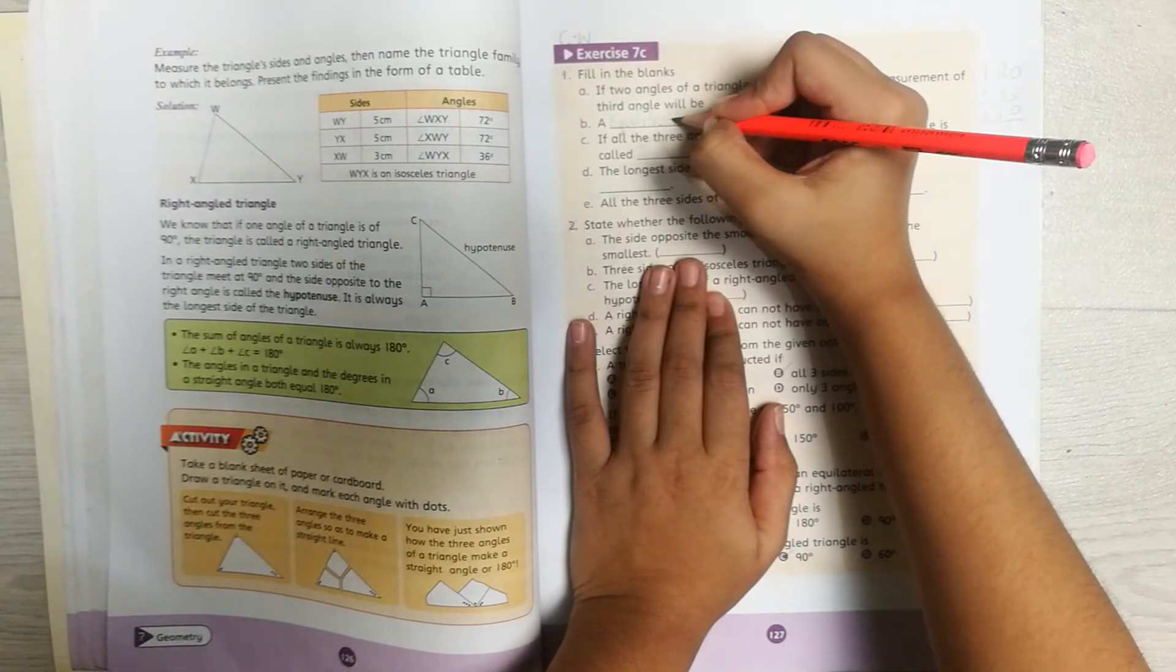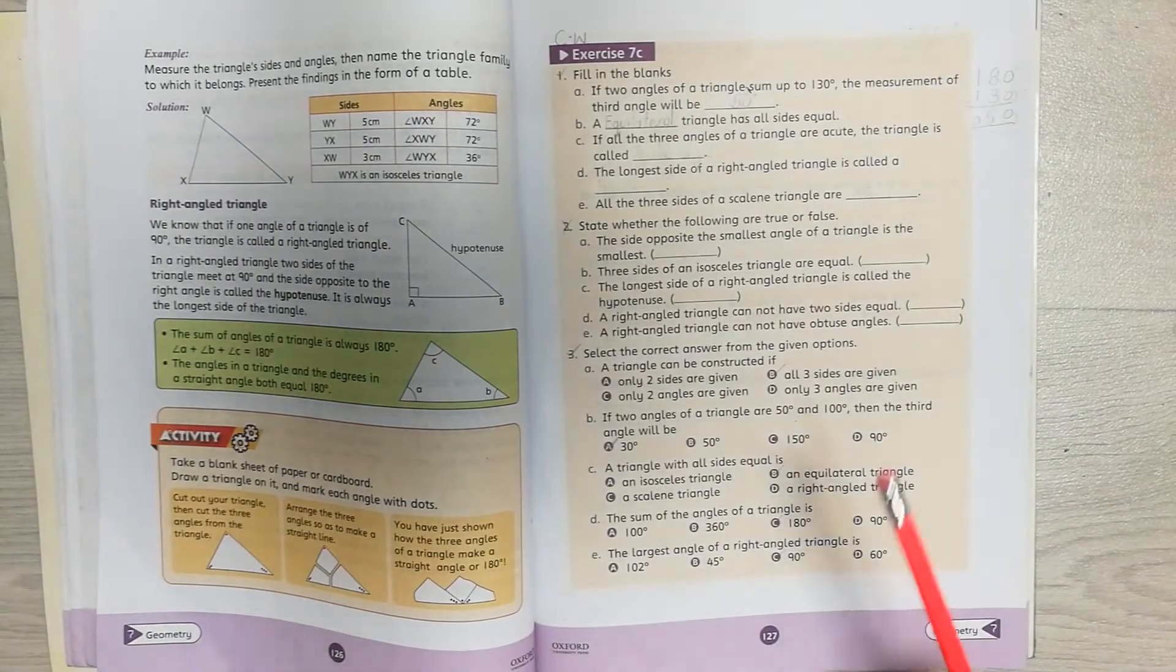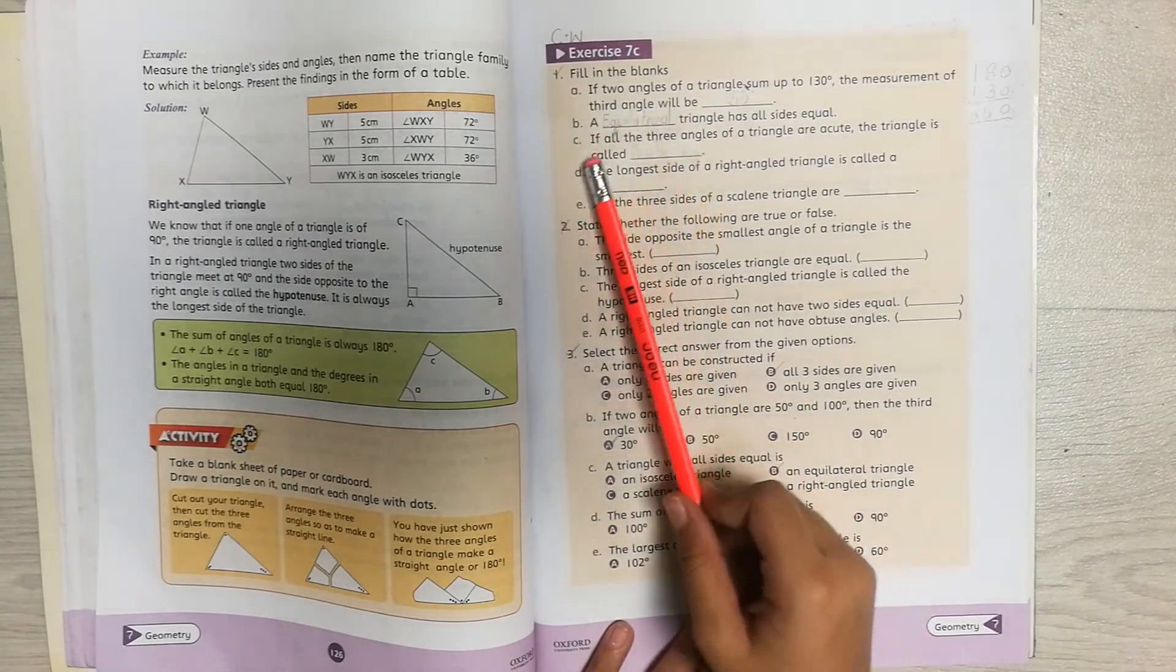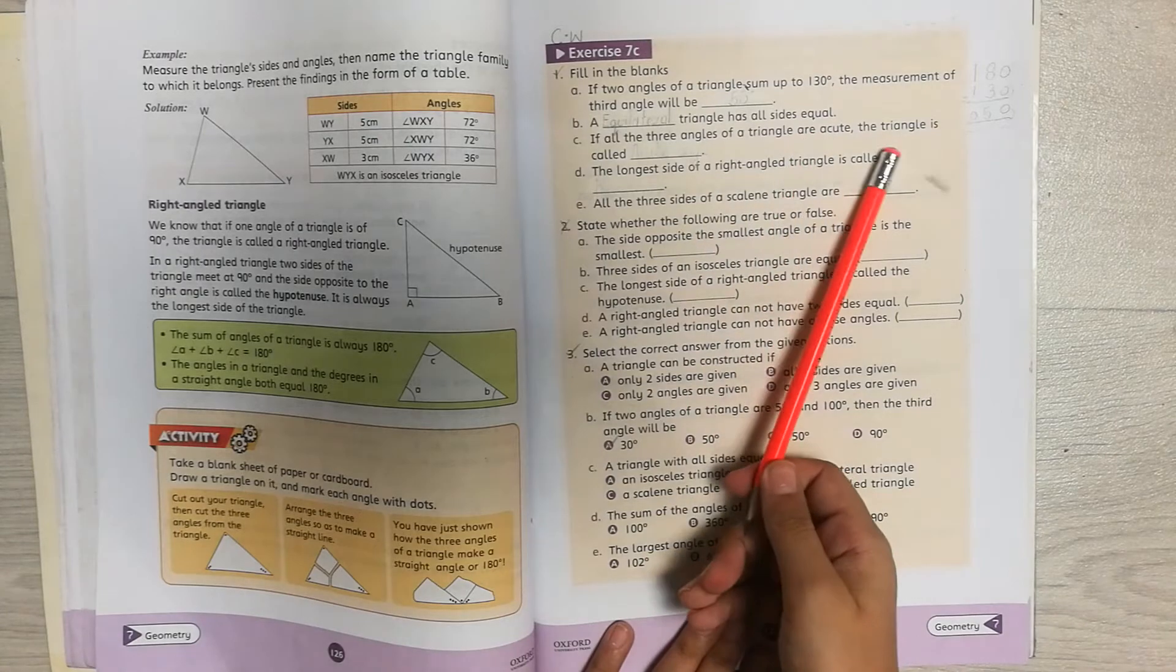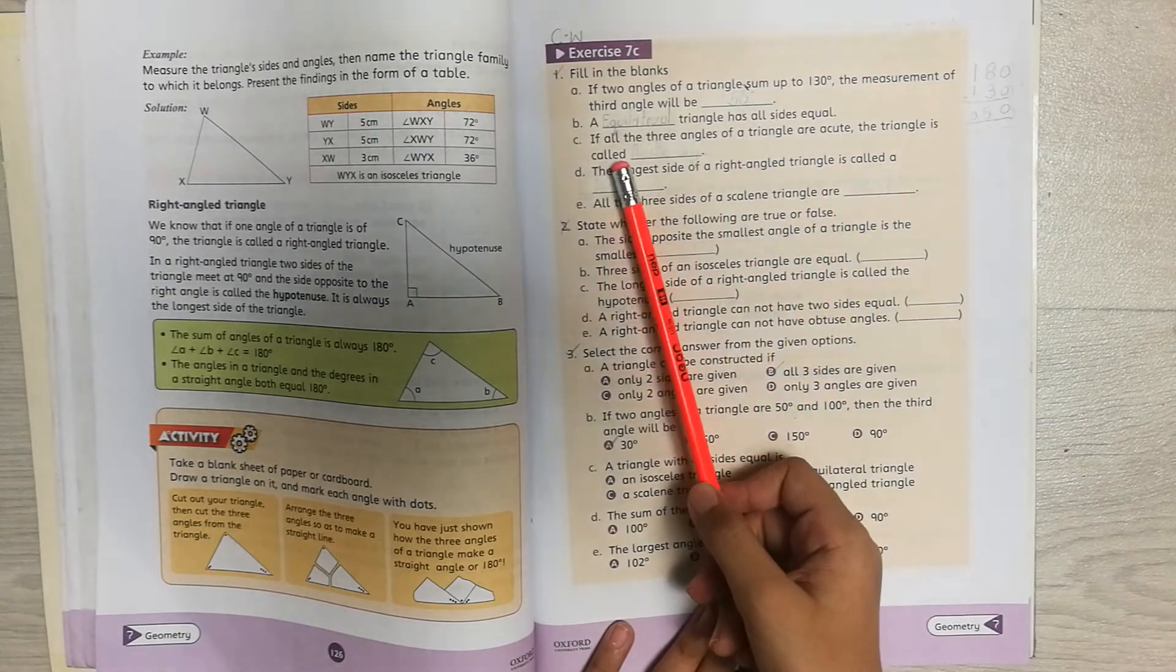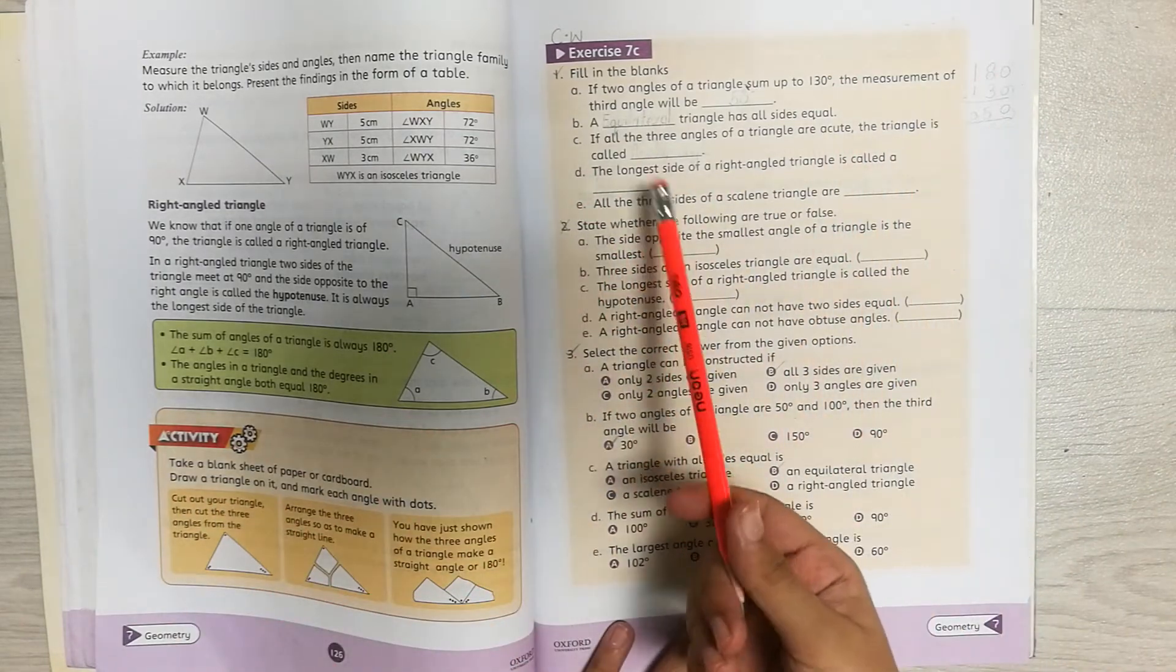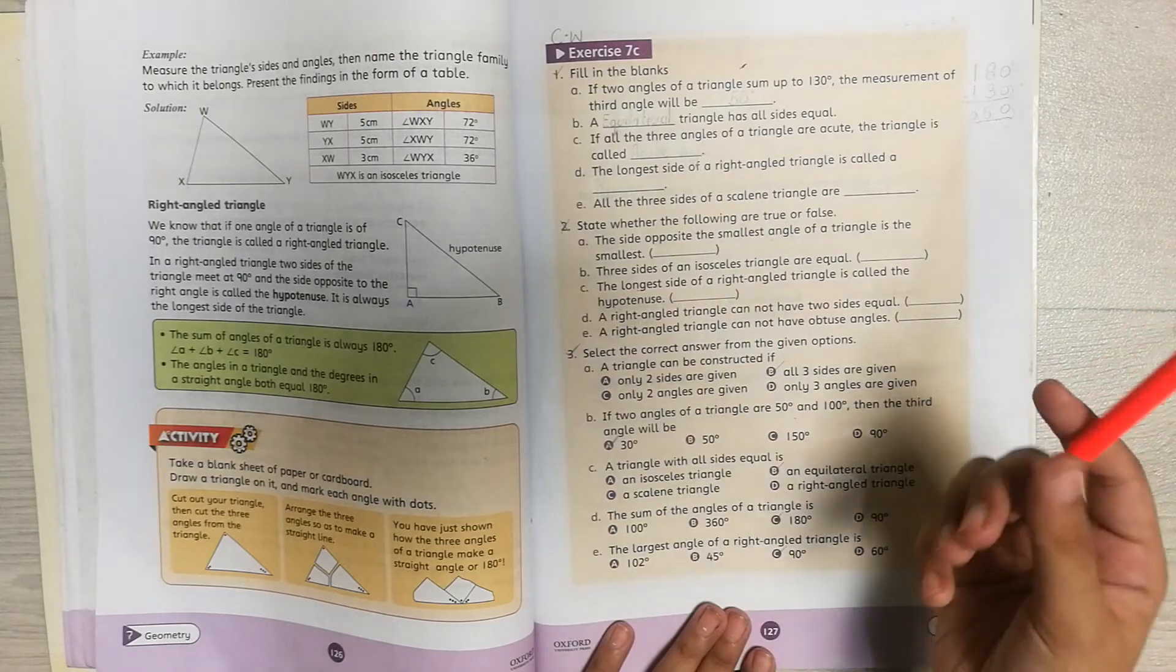Now let's go to part C. If all three angles of a triangle are acute, that triangle is called blank. It is acute because it's asking that if all three angles are acute, then what will the triangle be called? It will be called an acute angle triangle.